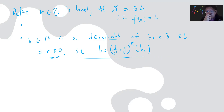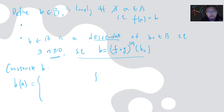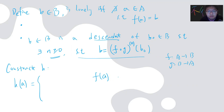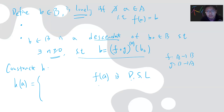Now I can construct h. The construction is very interesting. We define h(a) as follows: f is injective from A to B and g is injective from B to A. We ask whether f(a) is a descendant of a lonely point. If f(a) is a descendant of a lonely point, then I define h(a) = g⁻¹(a). Otherwise, h(a) = f(a). All the proof comes from this careful definition of descendants of lonely points.